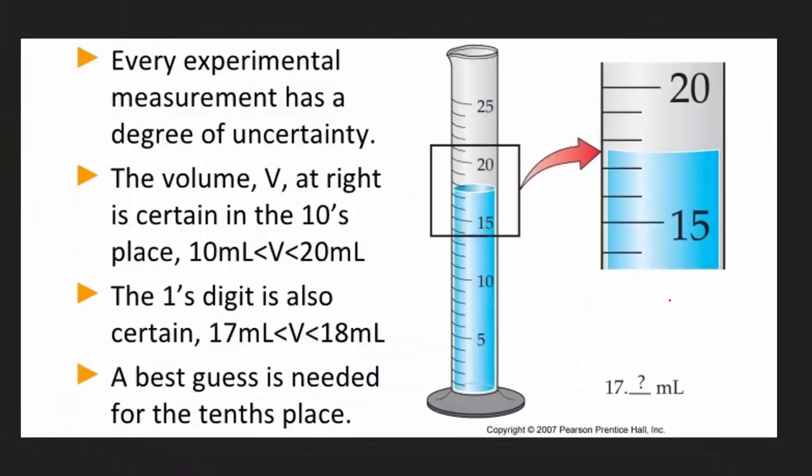Every experimental measurement has a degree of uncertainty. The volume at the right is certain in the tens place and certain in the ones digit, but it needs a tenth place which is guessed. If you look at the meniscus, which falls right about here—that's the downward curving of a liquid—